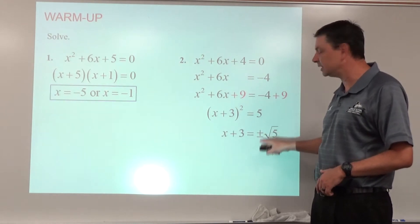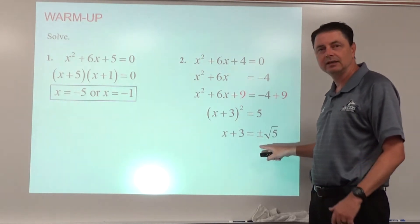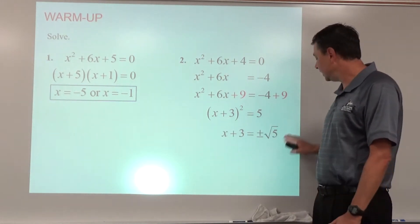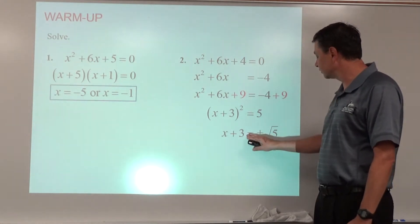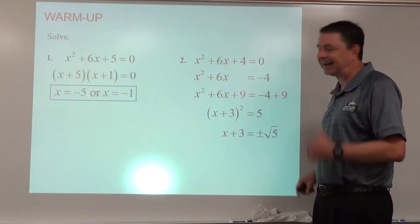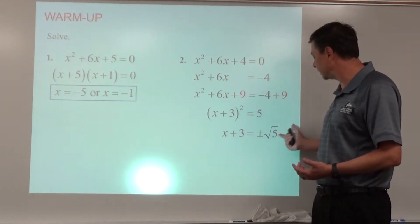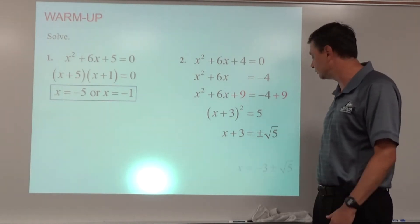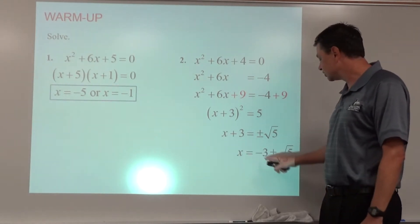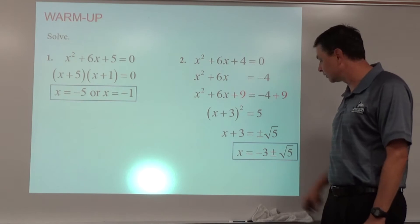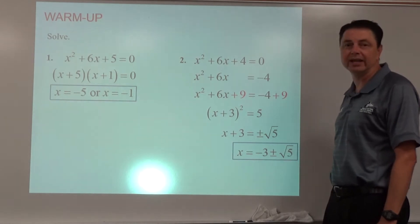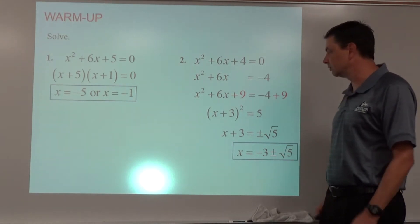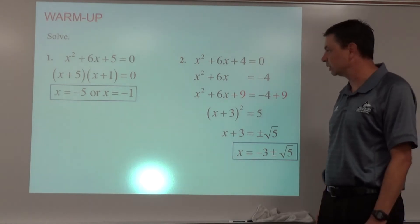Then it becomes a square root method problem: take the square root of both sides — don't forget the plus or minus — and subtract 3 to isolate x. I prefer writing the negative 3 in front so it doesn't appear connected to the √5. So x = -3 ± √5. We get two answers for that one as well.